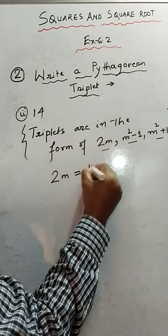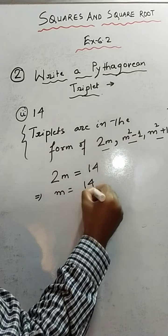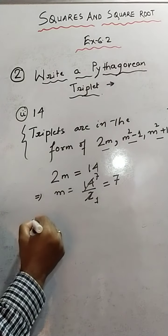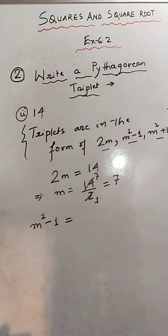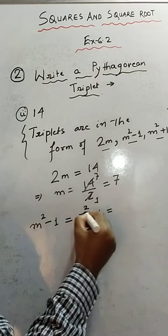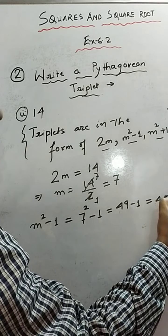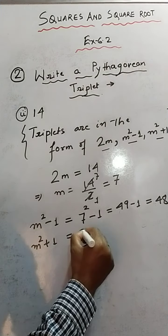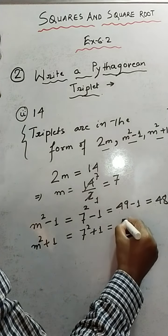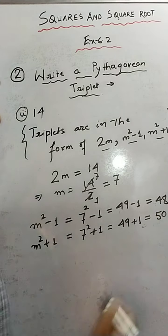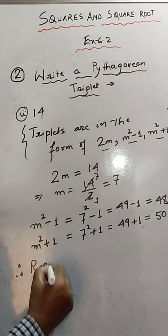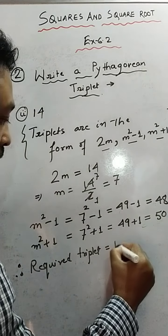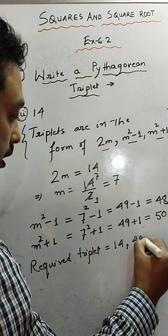For the next part, the given number is 14. So 2m = 14, which gives m = 14/2 = 7. Now the second number: m²-1 = 7²-1 = 49-1 = 48. The third number: m²+1 = 7²+1 = 49+1 = 50. Therefore, the required triplet is 14, 48, and 50.